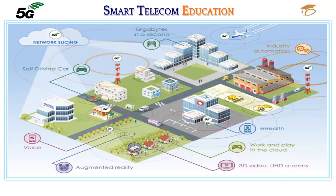So 5G should deliver significantly increased operational performance, for example increased spectral efficiency, higher data rates, low latency, as well as superior user experience — near to fixed network but offering full mobility and coverage. 5G needs to cater for massive deployment of Internet of Things while still offering acceptable levels of energy consumption, equipment cost, and network deployment and operation cost. It needs to support a wide variety of applications and services.